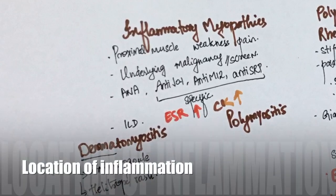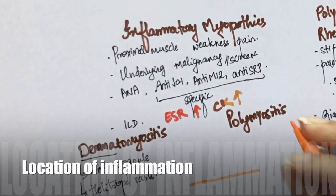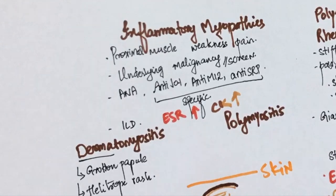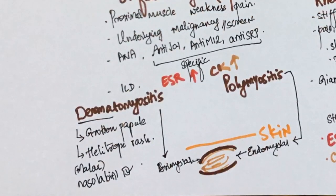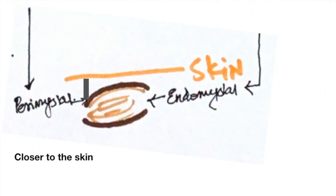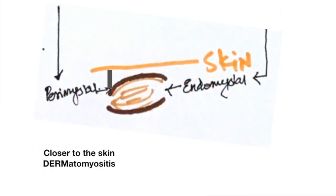Another thing that differentiates these two conditions is the location of inflammation. Dermatomyositis has perimysial inflammation while polymyositis has endomysial inflammation. Here's how I remember it: since the perimysium is the outer layer of muscles it is closer to the skin, and skin reminds me of the word 'derm' in dermatomyositis — so perimysial inflammation is seen in dermatomyositis, while endomysial inflammation is seen in polymyositis.